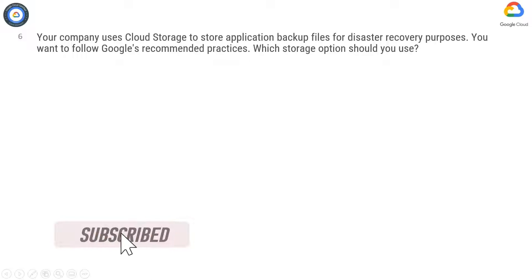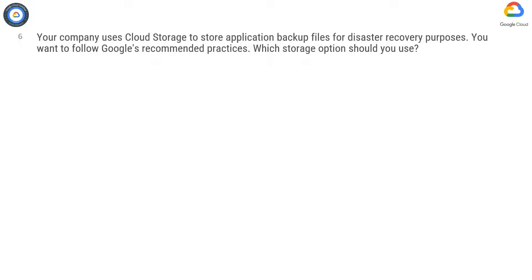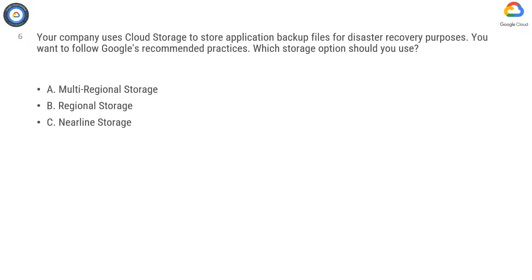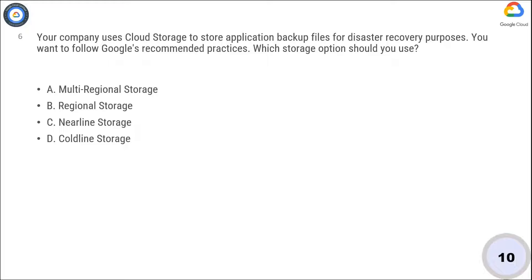Your company uses cloud storage to store application backup files for disaster recovery purposes. You want to follow Google's recommended practices. Which storage option should you use? Option A: Multi-Regional Storage. Option B: Regional Storage. Option C: Nearline Storage. Option D: Coldline Storage. Now take 10 seconds to think and select the correct answer.